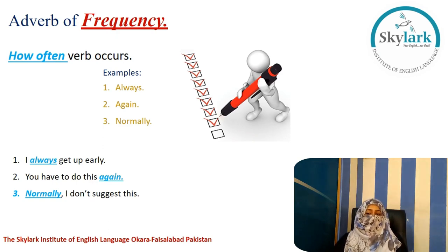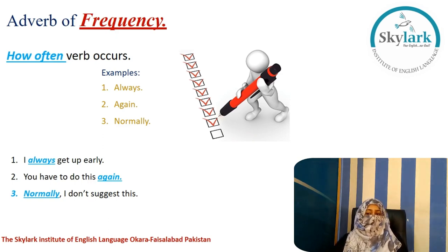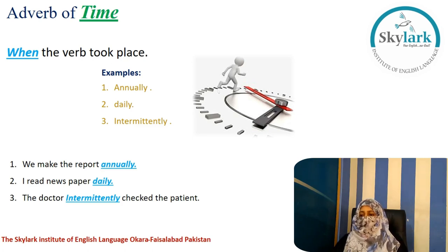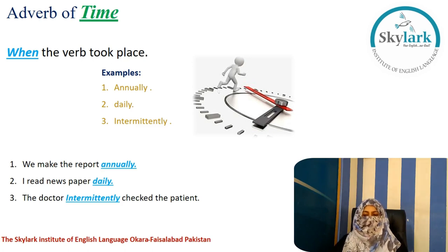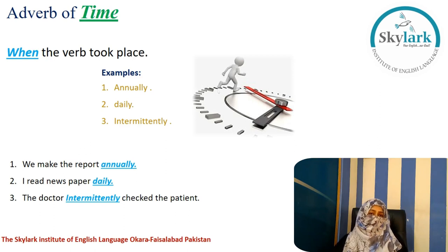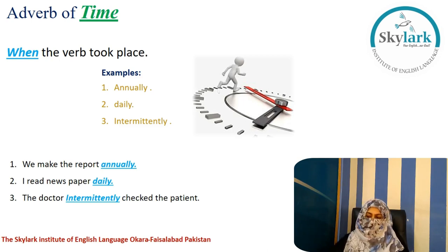Adverb of time tells us when the verb or action took place. Examples: annually, daily, intermittently. Sentences: 'We make the report annually,' 'I read the newspaper daily,' 'The doctor intermittently checked the patient' — meaning the doctor checked on the patient from time to time.